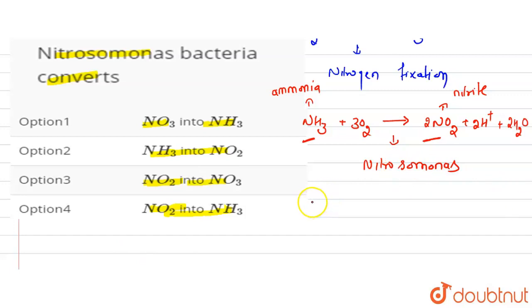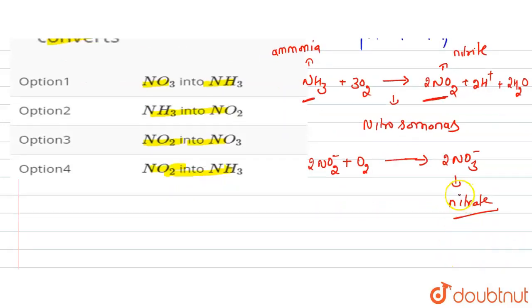Now what will be the nitrite form? The nitrite is further oxidized and this will convert into nitrate. For this reaction, the bacteria responsible is Nitrobacter.